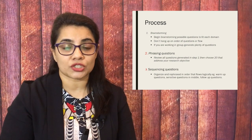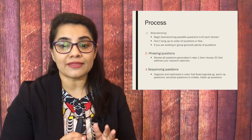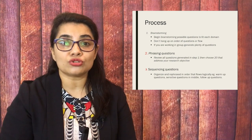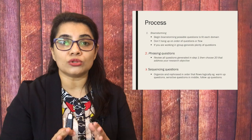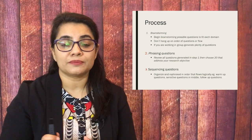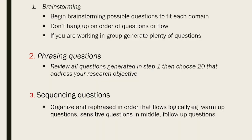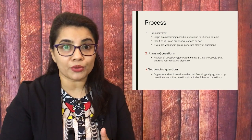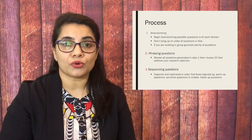Number two is phrasing questions. Review all questions generated in step one and choose around 20 that address your research objectives. If you have a shortage of time, separate the 20 most important questions to cover first. Number three is sequencing questions — organize and rephrase them in an order that flows logically. For example, begin with warm-up questions, then ask sensitive questions in the middle, and follow-up questions later.